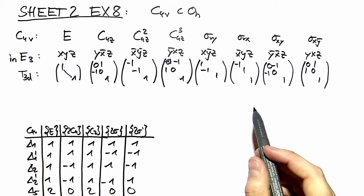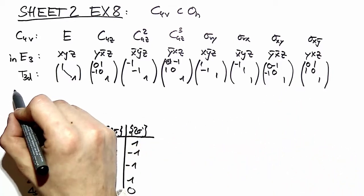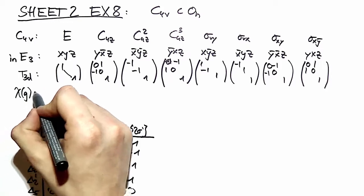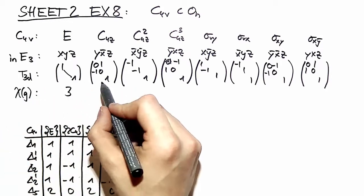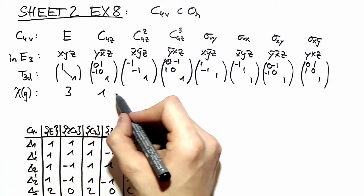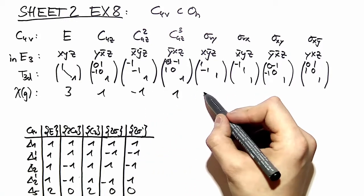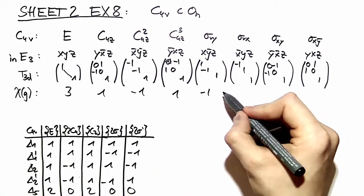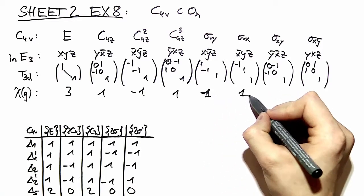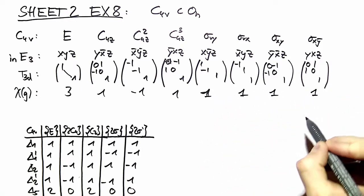How do we find its irreducible components? Of course, look at the characters. So this is 3. If we look at the trace right here, it's 1, this is -1. It's really easy to compute and it's a good exercise: +1, 1, 1, 1, 1.